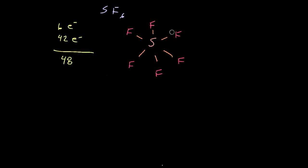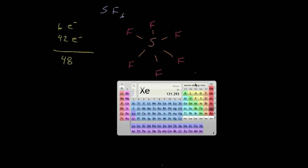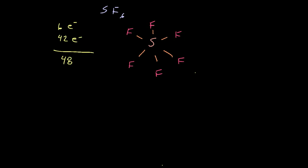We have 48 total. We know that there are two electrons for each of the six single bonds, so that's 12. We just need to fill in the rest. I'm going to fill them in around the fluorines, because fluorine wants to have eight — it is not a third energy level element like sulfur is. Sulfur is in the third energy level, so it can have more than eight and break the octet rule. Fluorine cannot, so we're going to fill as many octets around fluorine as we can.